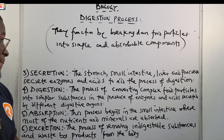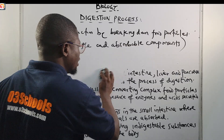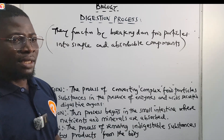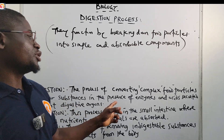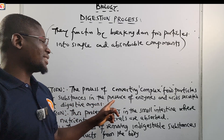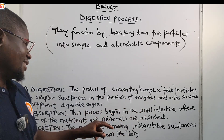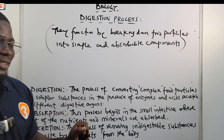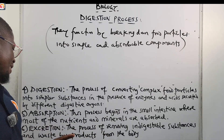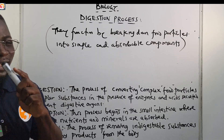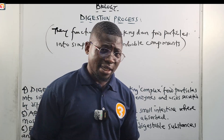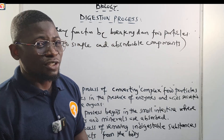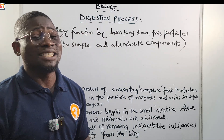Now let us go to the fourth process, which is digestion itself. Digestion is the process of converting complex food particles into simpler substances in the presence of enzymes and acids secreted by different digestive organs. It is very important to note that some classes of food can be digested early — as early as the mouth — while some start majorly at the stomach, and some even at the small intestine.